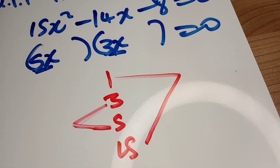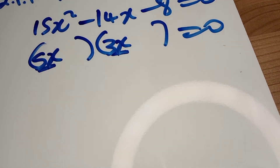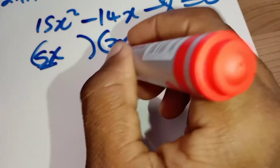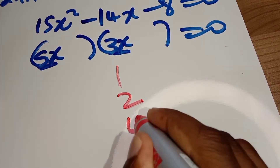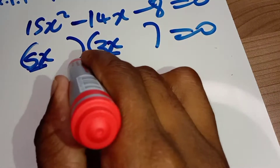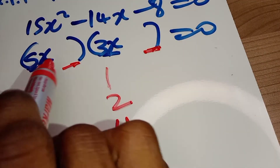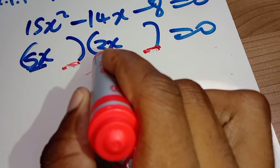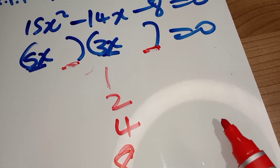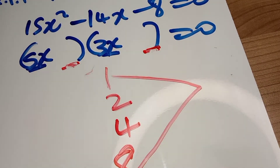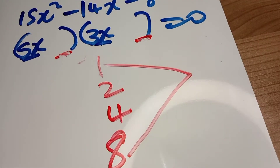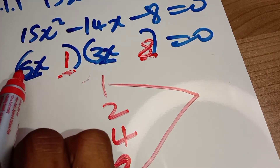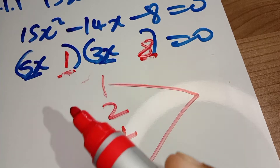Now we need the factors of eight for us to factorize this. We have one, two, four, and eight. Whatever sits in the binomials — this five is going to multiply whatever is here, and whatever sits there is going to be multiplied by three. We can try one and eight: one multiplied by eight gives us eight. If we have eight here and one there, this five is going to multiply the eight, and when we multiply five by eight we get 40.